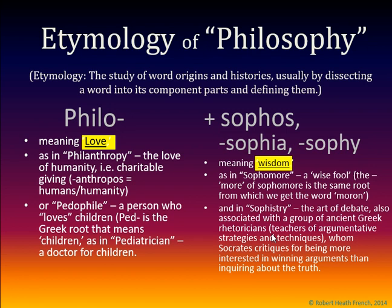The word philosophy has two parts: philo, meaning love, and sophos — coming from the Greek Sophia, which comes into English as Sophie, meaning wisdom. The root philo meaning love can be seen in words like philanthropy, meaning the love of humanity, where anthropos refers to humans. You may also know the motto for the city of Philadelphia, which is the city of brotherly love.